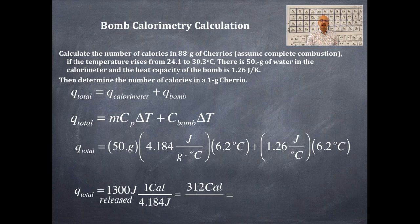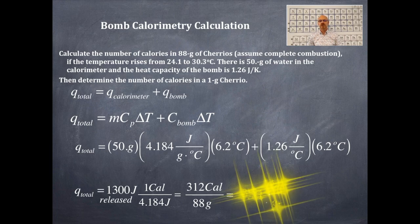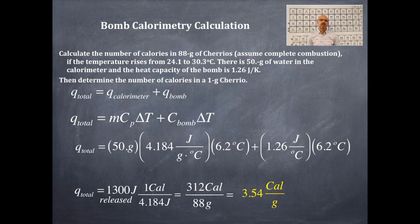Well, I'm supposed to get the calories per gram of Cheerios. So we're going to divide this number by the number of grams of Cheerios which were inside the bomb. And this will give me the calories per gram of a Cheerio. And so that is 3.54 calories per gram of a Cheerio. So there's your answer there. This is how we determine the calories in a food substance, whatever that is.